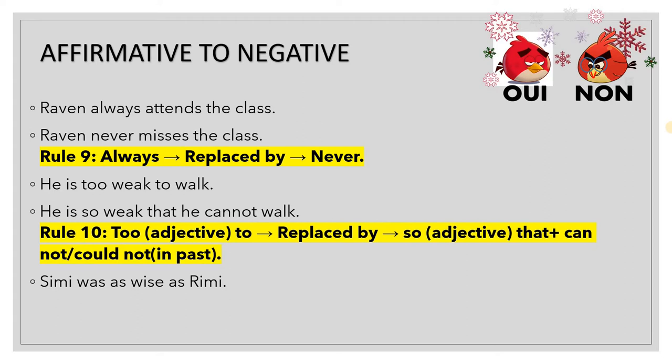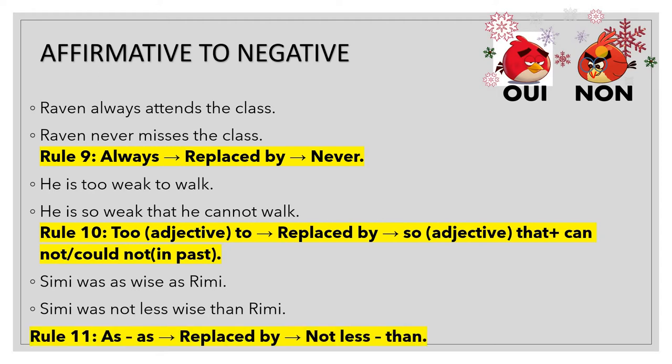'Simi was as wise as Remy' — here two people are compared. This becomes 'Simi was not less wise than Remy.' We compare only those two people and cannot bring in any other component. The rule: 'as [adjective] as' in the affirmative is replaced by 'not less [adjective] than' in the negative.